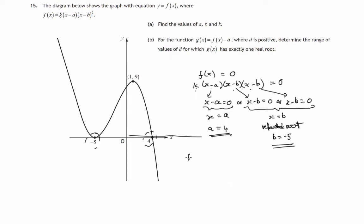So what do we know now? We know that f of x is some number k times x minus 4 times x minus negative 5 squared. That's x plus 5 squared.